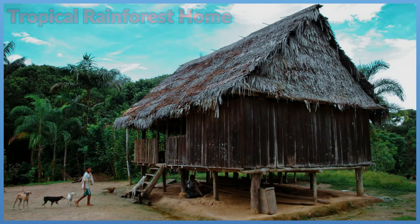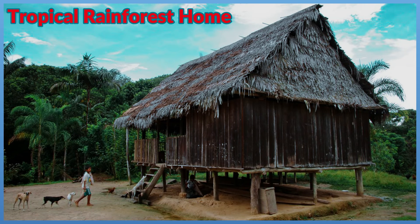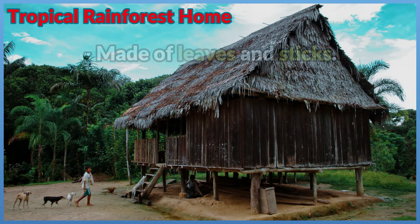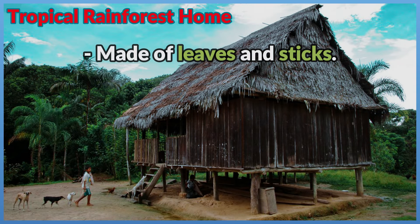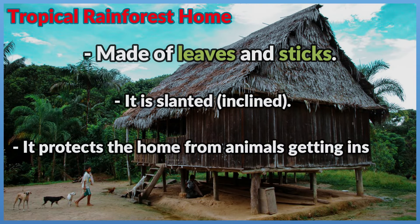Tropical Rainforest Home — Material of the roof: made of leaves and sticks. Properties of roof material: it is slanted and inclined, and it protects the home from animals getting inside.